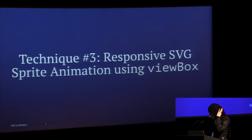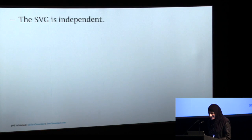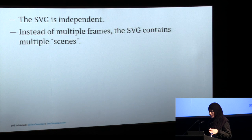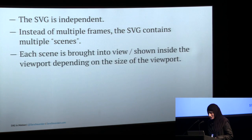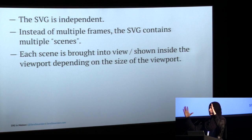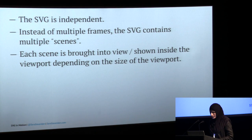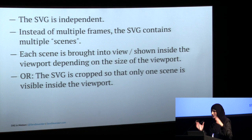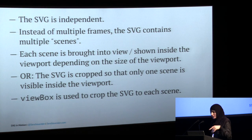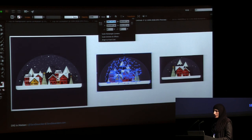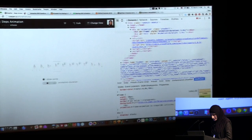Technique three: responsive SVG sprite animation using the viewBox. Instead of multiple frames, the SVG contains multiple scenes. Each scene is brought into view depending on the viewport size — giving you responsive animation. On big screens you show a full composition; on smaller screens a different scene. The SVG is cropped so only one scene is visible inside the viewport, and the viewBox is used to do this cropping.